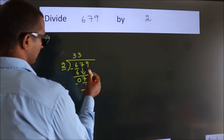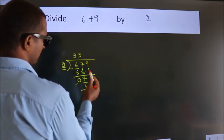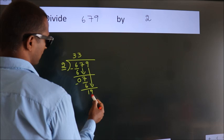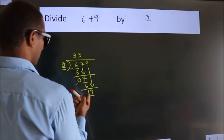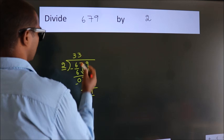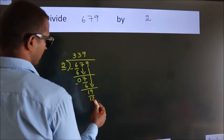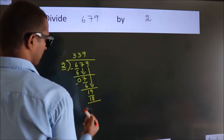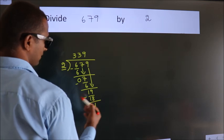After this, bring down the next number. 9 down, so 19. A number close to 19 in the 2 times table is 2 times 9 equals 18. Now we subtract. We get 1.